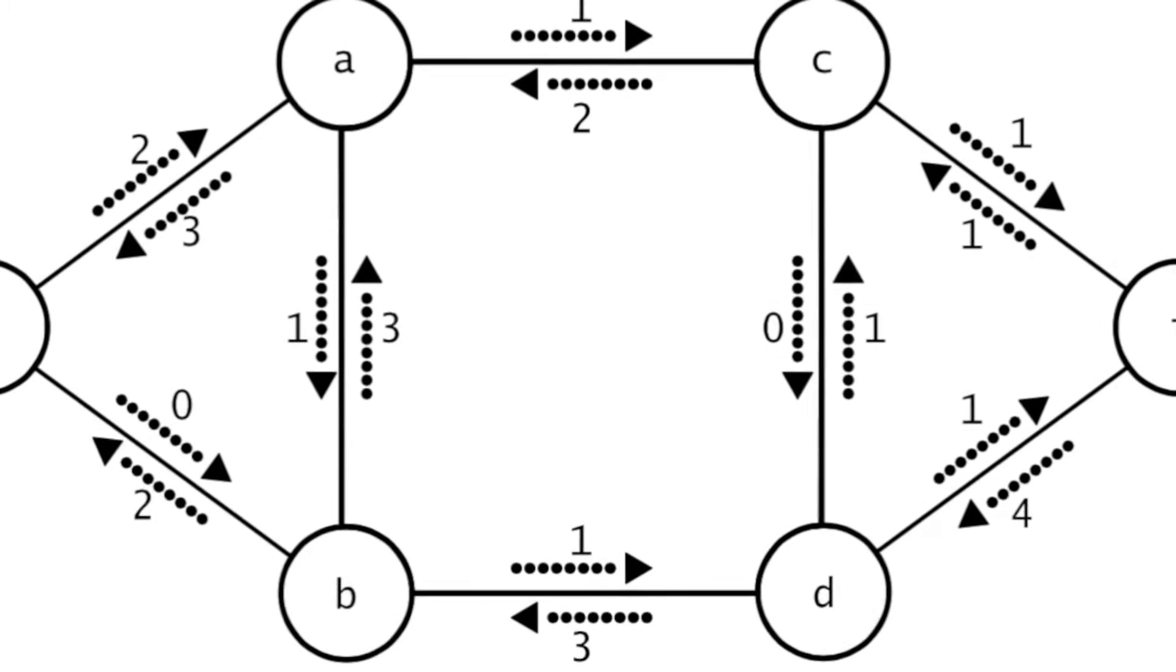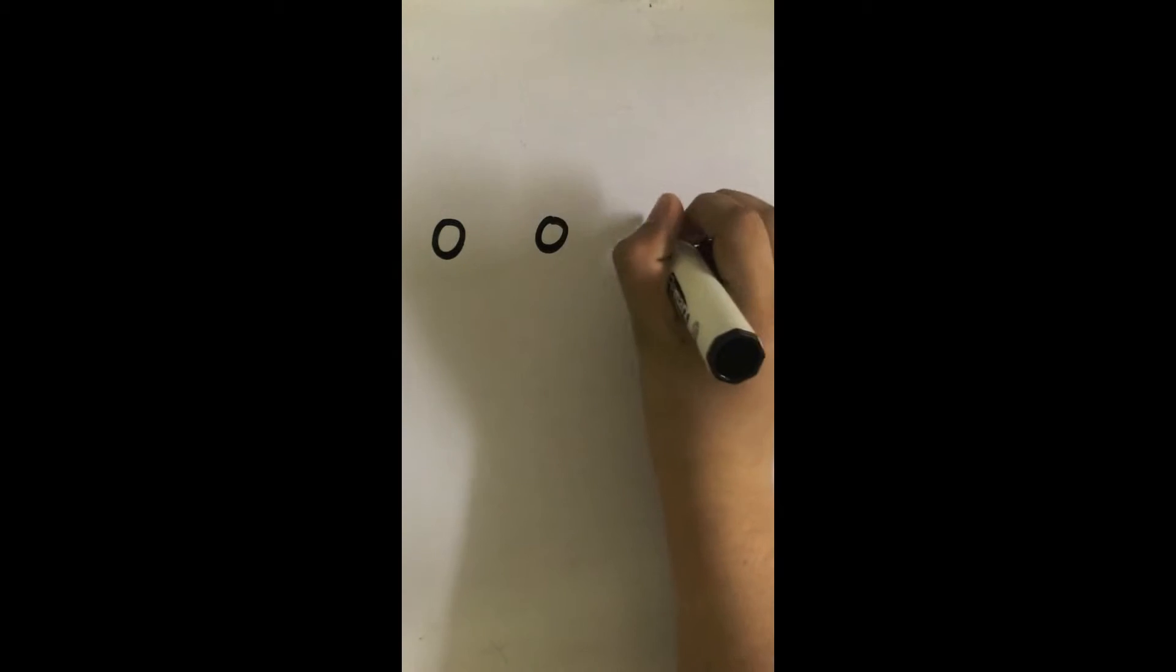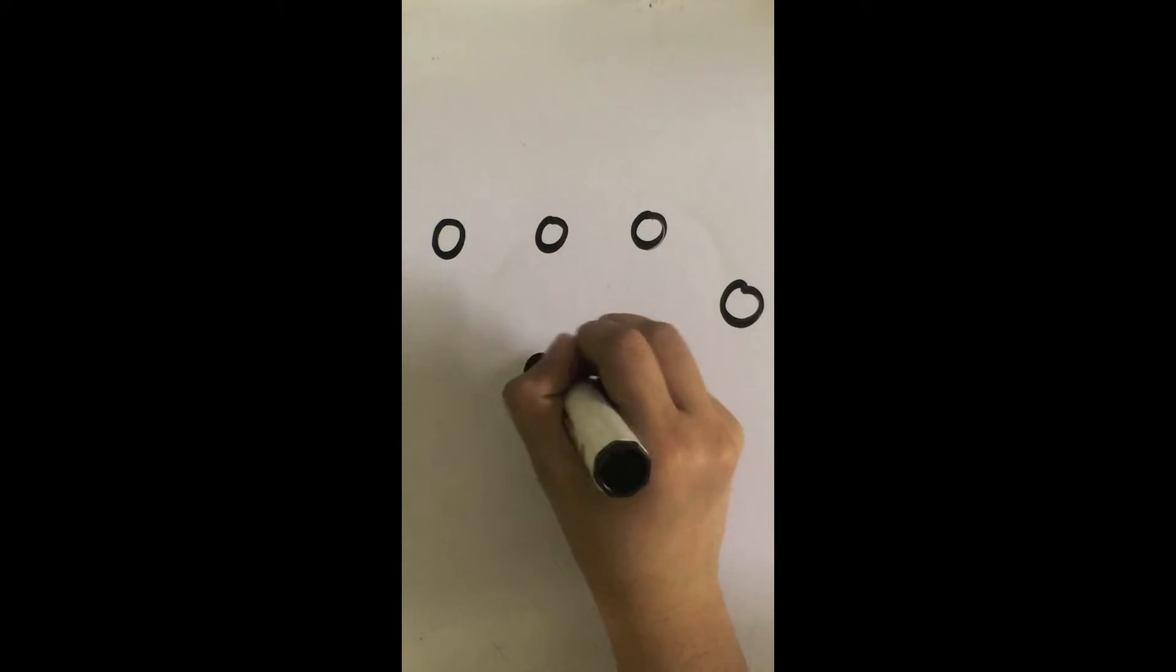Then, using graph theory, I created a flow network, which is a directed graph where each edge is the capacity of the pipe and each node represents a drain opening.